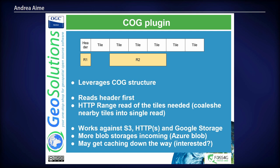The COG plugin currently works against S3, HTTPS, and Google Storage. We are implementing Azure Blob support these days — it's going to be available in weeks. We might also add local caching of blob contents, which would be interesting for speed. If you're interested, please contact me. And of course, more blob storage options are planned.